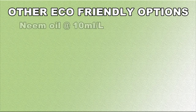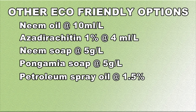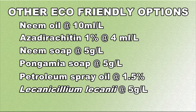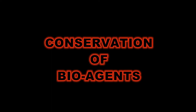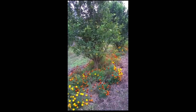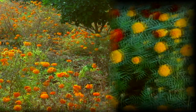Use of neem oil, azadirachtin, neem soap, pongamia soap, petroleum spray oil, and Lecanicillium lecanii can be integrated along with bioagents for safe and effective management of citrus insect pests. Conservation of bioagents plays an important role in biocontrol. Avoid insecticide sprays during bioagent-active periods like early spring and late winter. Conserve the natural build-up of parasitoids in orchards by planting nectar-bearing flowering plants like marigold and castor on the bunds.